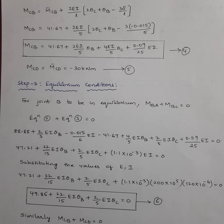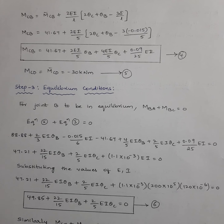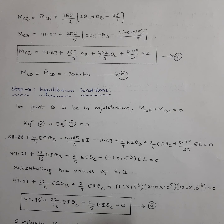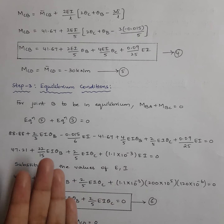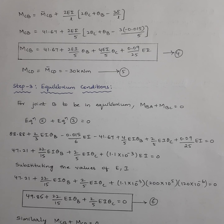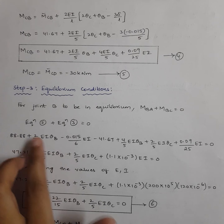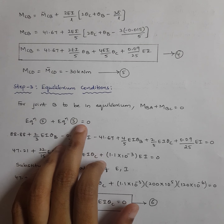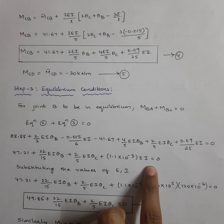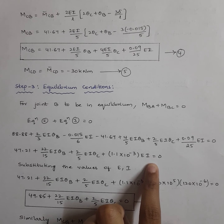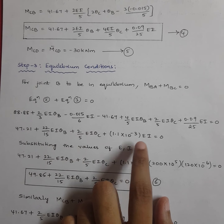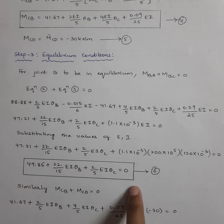Step 3 is applying the equilibrium conditions. At joint B, for equilibrium: the moment going left plus the moment going right must sum to zero. So M_BA + M_BC = 0. M_BA is given by equation 2 and M_BC by equation 3. Add them and set equal to zero. Substitute the values of E and I for this problem to get equation 6.